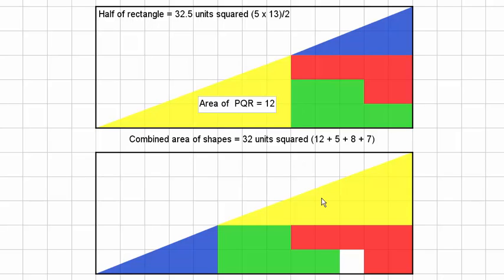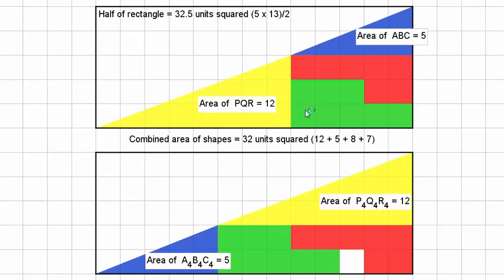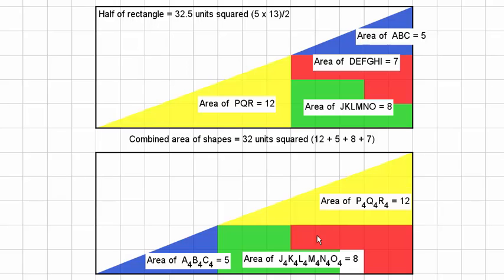So the yellow triangle, area of 12. The blue triangle, area of 5. The green shape, 8. And the red shape, 7.